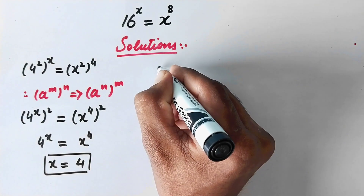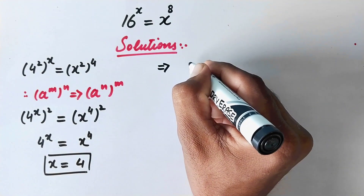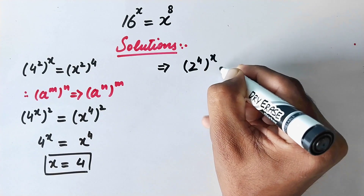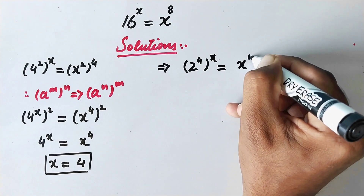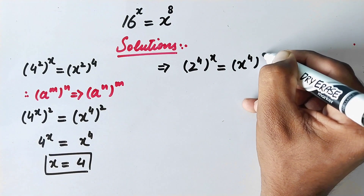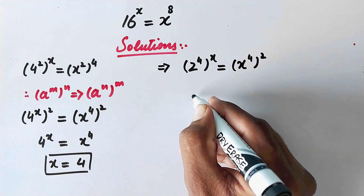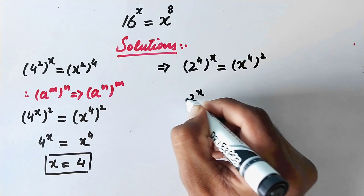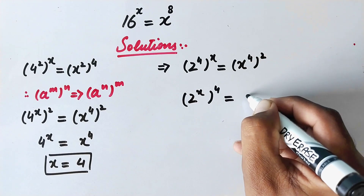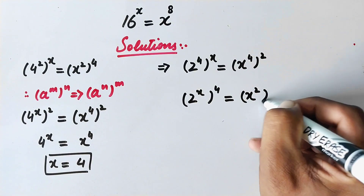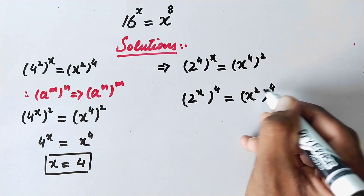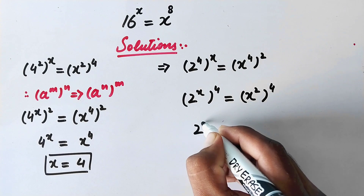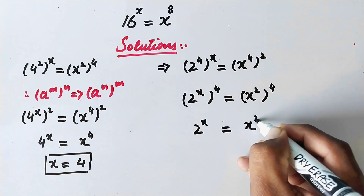In the second solution, we can write 16 to power x as 2 to power 4 to power x, which is equal to x to power 4 to power 2. By following the same power exchange rule, we get 2 to power x to power 4 is equal to x to power 4. Now again the powers on both sides are equal, so we can compare the bases, giving us 2 to power x is equal to x squared.